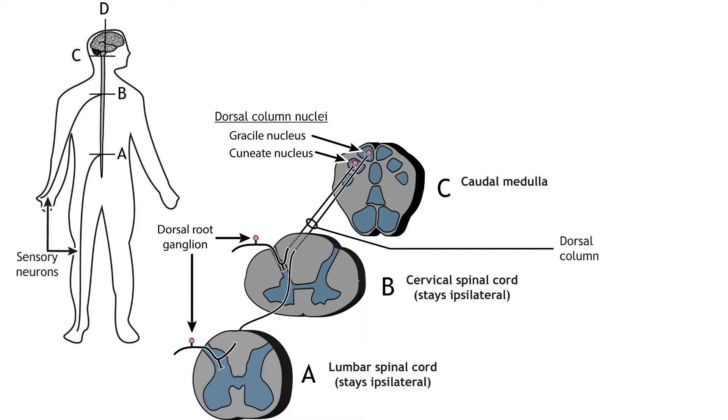The axons of sensory neurons in the lower body remain separate from the axons of sensory neurons in the upper body throughout the pathway. These two populations of neurons synapse in different regions of the brain stem. The lower body axons terminate in the gracile nucleus, whereas the upper body axons terminate in the cuneate nucleus.